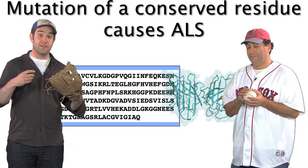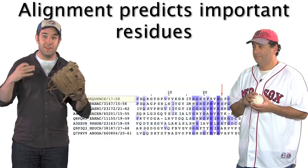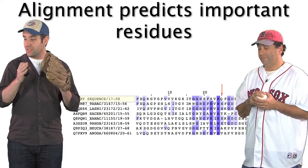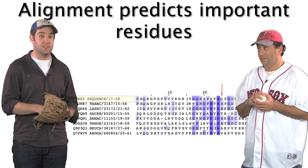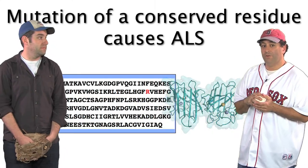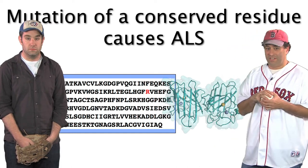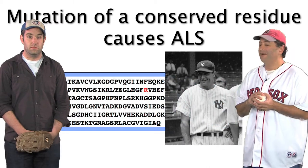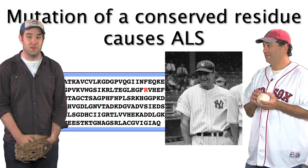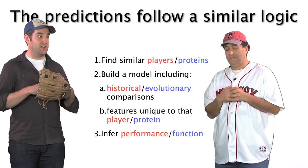Moreover, we can look at what is different about our protein versus all of its family members. One difference is that it contains a mutation at a very conserved position — all other family members have a histidine at that position, whereas this protein has an arginine. That mutation has a dramatic effect: individuals who carry it always develop amyotrophic lateral sclerosis — ALS, or Lou Gehrig's disease — which affected the great slugging first baseman of the 1920s and 30s.